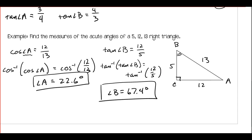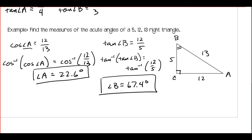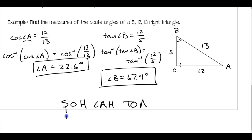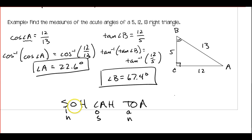There's a mnemonic device you may have seen before for memorizing the three trig functions: SOH-CAH-TOA. The S is for sine, the C is for cosine, and the T is for tangent. The O-H, A-H, and O-A represent the pieces of each ratio: sine is opposite over hypotenuse, cosine is adjacent over hypotenuse, tangent is opposite over adjacent. Make sure you write down any questions, and we'll see you next time.